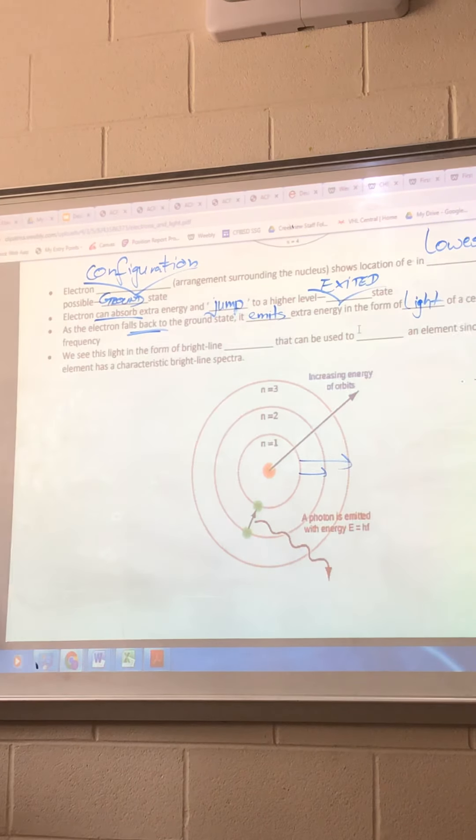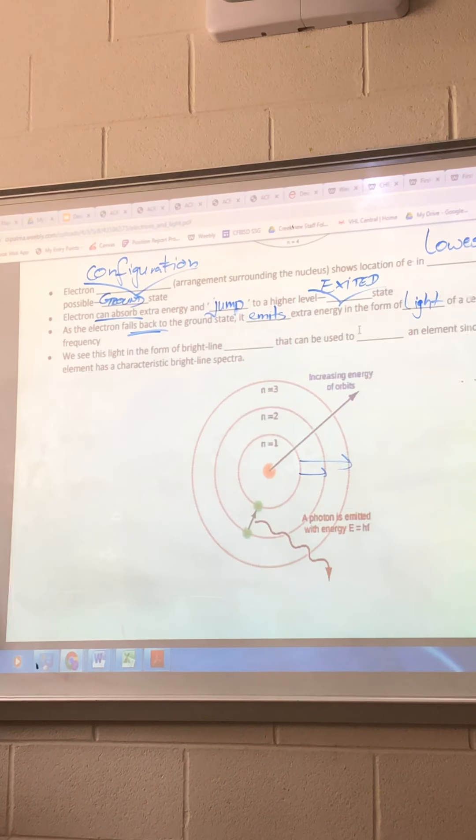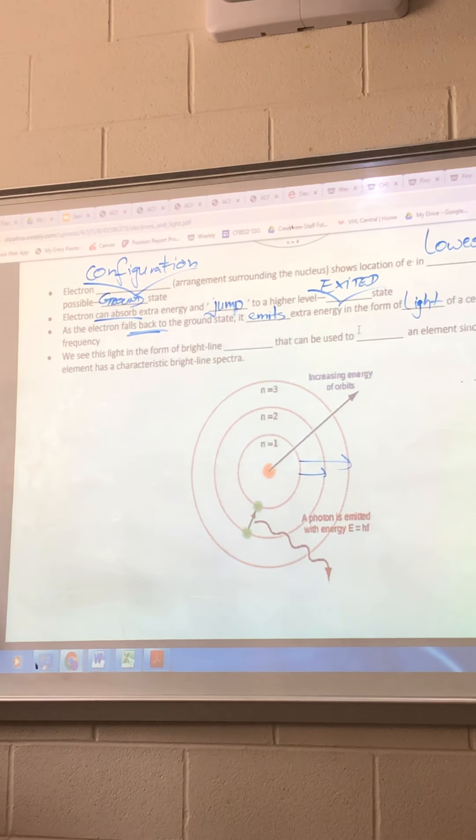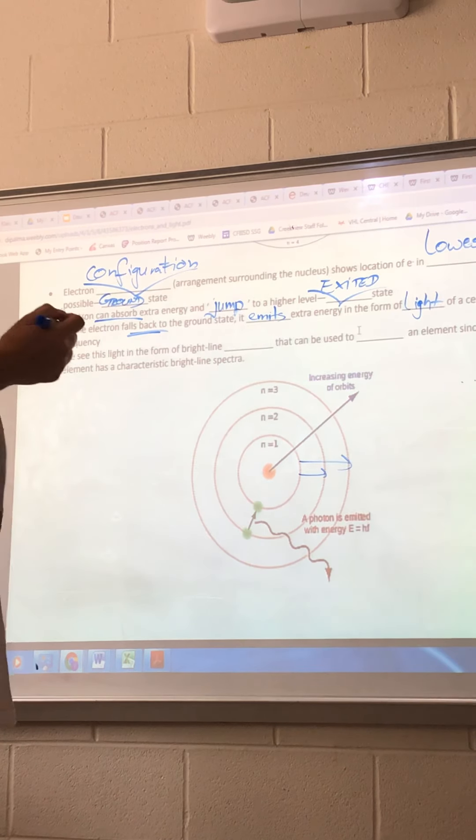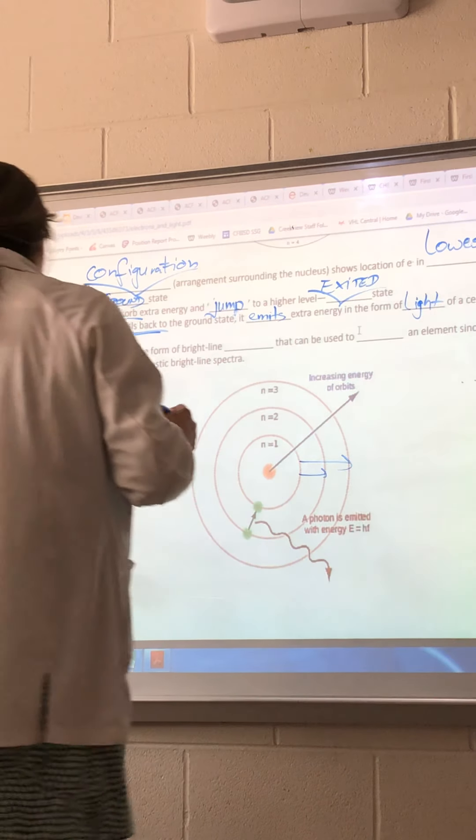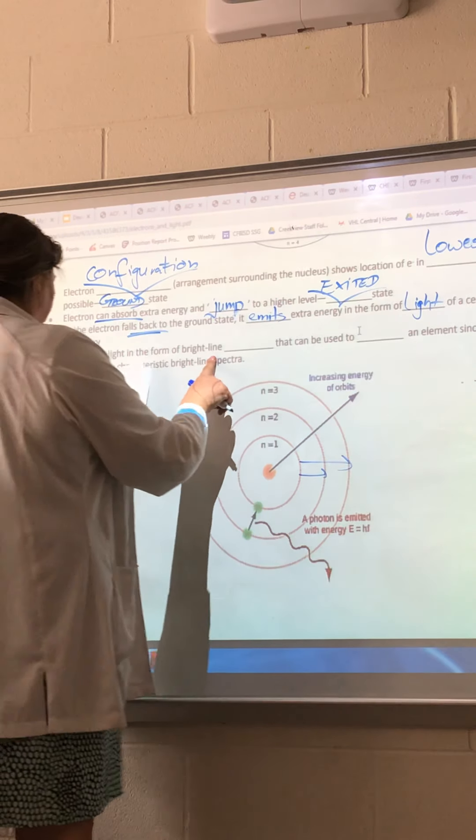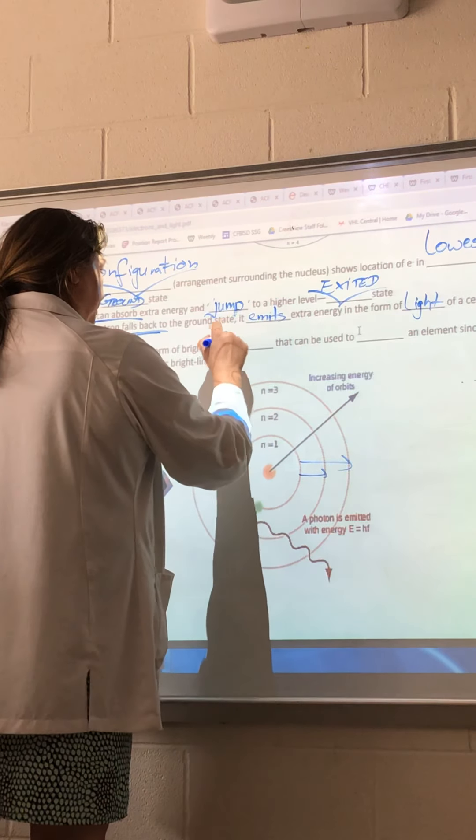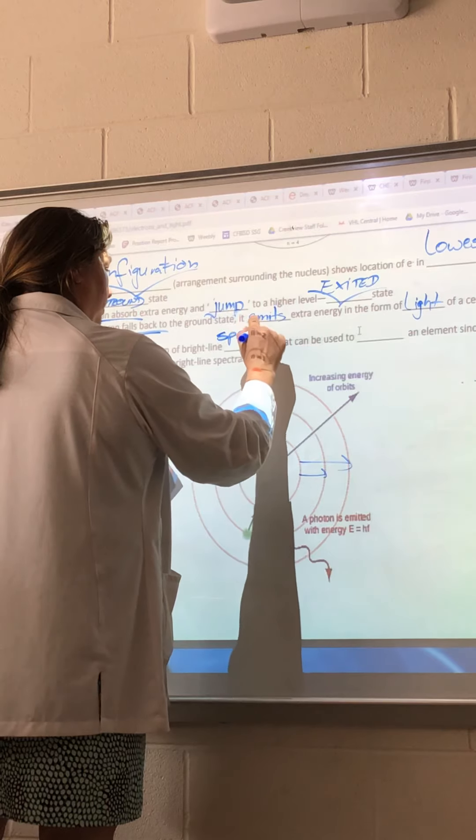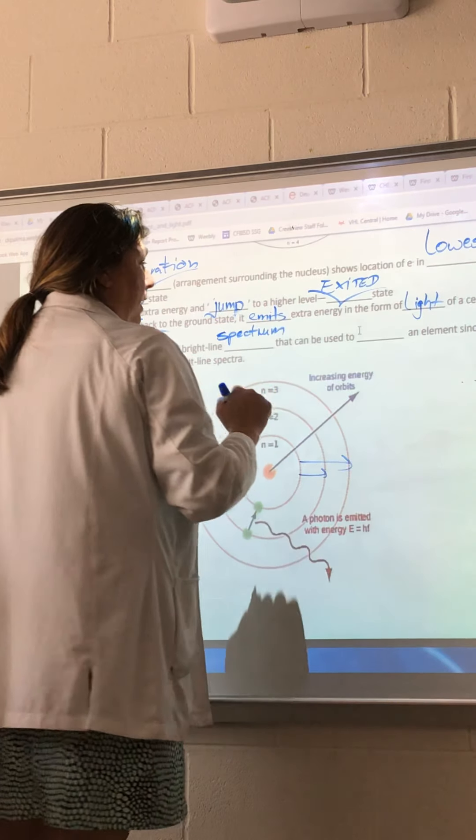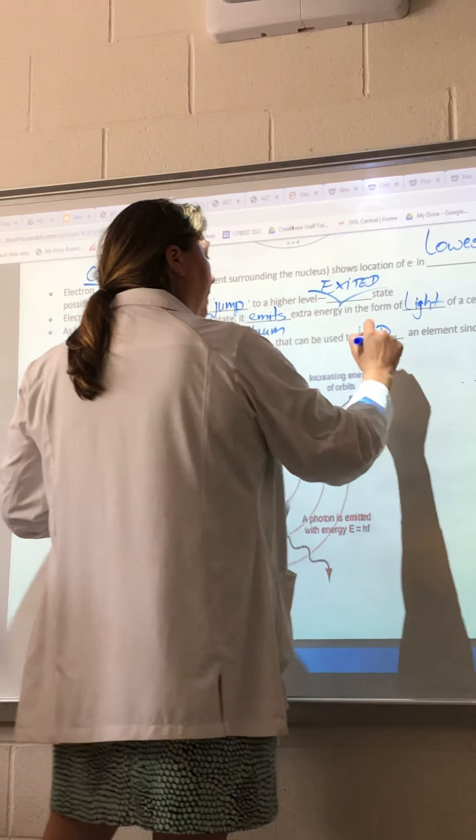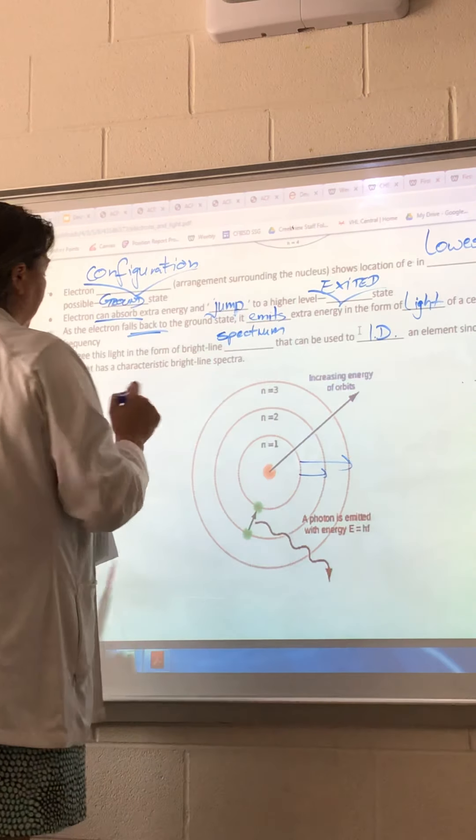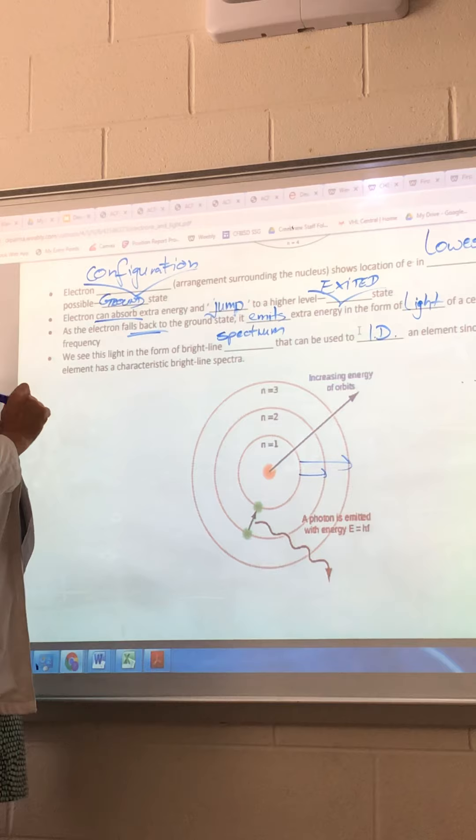Yellow, green, orange, blue, purple. And all this we will study together on Thursday in our lab. So we see this light in the form of a bright light spectrum. And that can be used to identify an element. Since every element has a characteristically bright light spectrum.